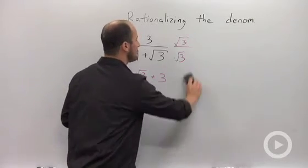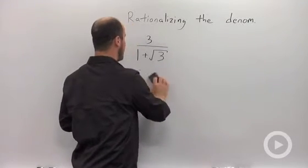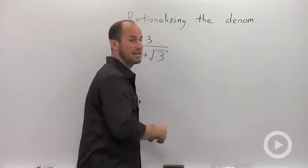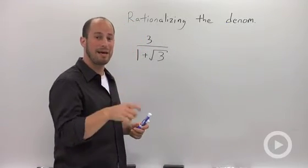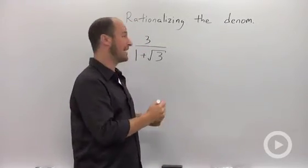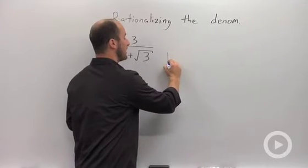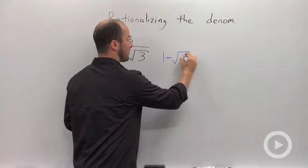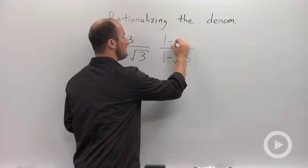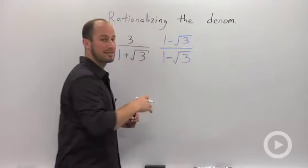What we actually have to do is multiply by something else and that something else is called the conjugate, which is basically the same numbers but the opposite sign in between. So that in this case is going to be 1 minus root 3 over 1 minus root 3. It has to be multiplied by 1.